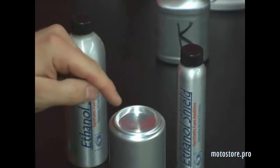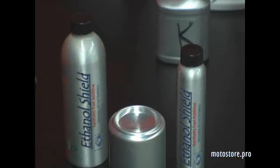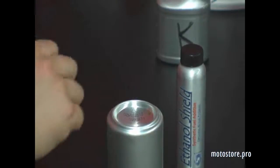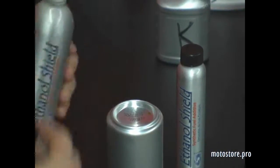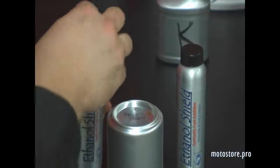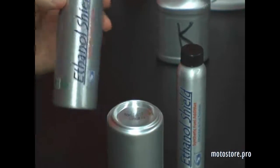So you can see the carbon stamp right there. Okay, so we're going to just take a little bit of the ethanol shield and just pour a dab in there.